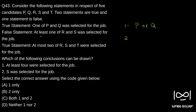The second statement is a false statement: at least one of R and S was selected for the job. How can this statement be false? At least one of R and S was selected for the job can be false only if both R and S got rejected. So if at least one or both were selected, this statement would have been true. Therefore, R and S were both rejected.